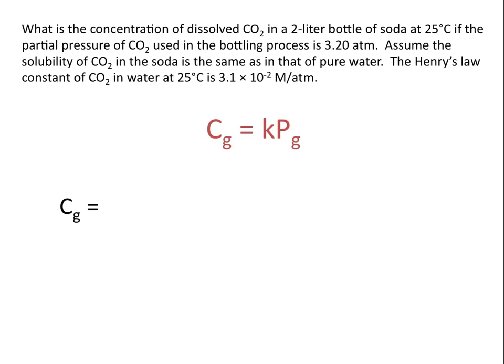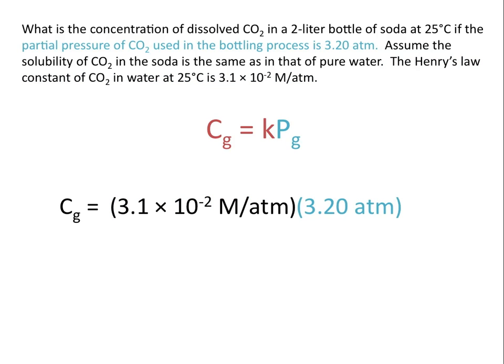So the concentration of the dissolved gas is equal to the Henry's Law constant — which is dependent on the gas, the solvent, and the temperature — and in this case is 3.1 times 10 to the negative second molar per atmosphere, multiplied by the partial pressure of the gas, or in this case 3.2 atmospheres.